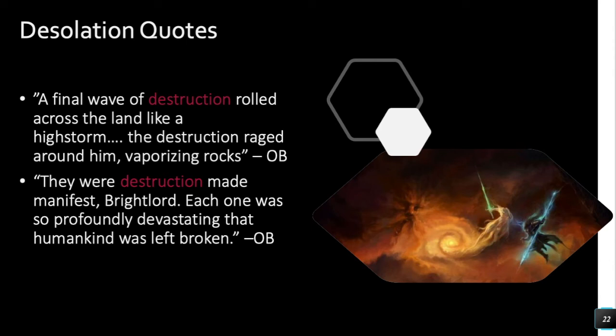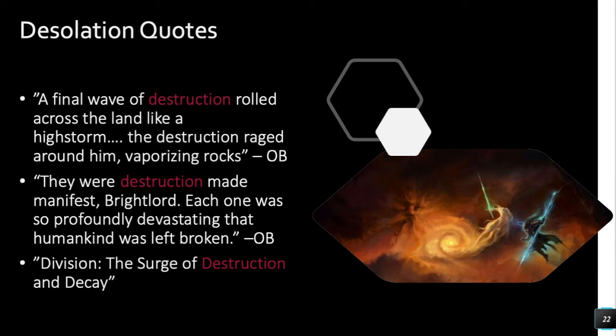Dalinar's ardent, a specialist on the Desolations, said: 'They were destruction made manifest, Brightlord. Each one was so profoundly devastating that humankind was left broken.' From the Ars Arcanum in the back of every book: the surge of Division — which would be one of the nine Fused brands — is also the surge of the Dustbringers and the Skybreakers. But if you look at the Knights Radiant quiz descriptors, there's a vast difference between how Dustbringers are described versus how Skybreakers are described.